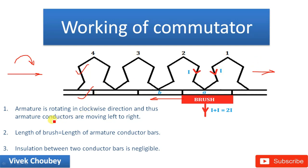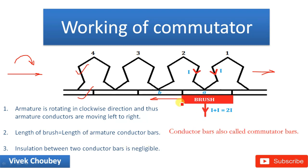The second assumption is that the length of the brush is equal to the length of the armature conductor bars. So the length of this brush — shown in red — is exactly equal to the length of the conductor bars. The third assumption is that the insulation between two conductor bars is negligible — that is, there is almost zero insulation between them.